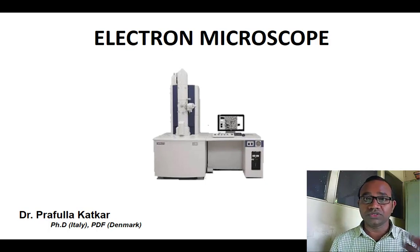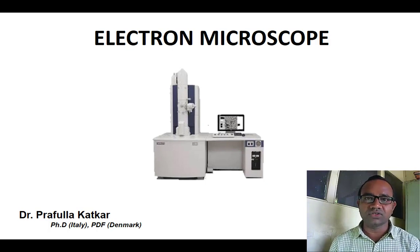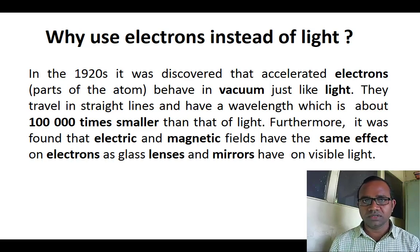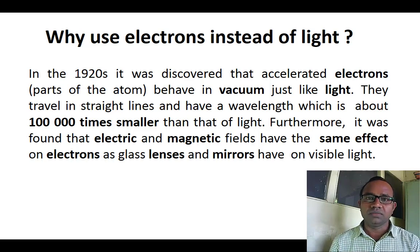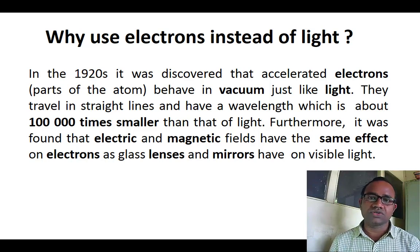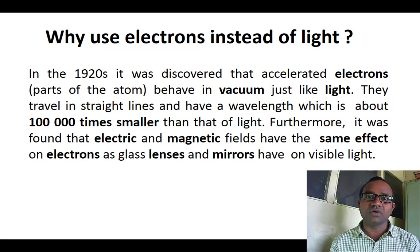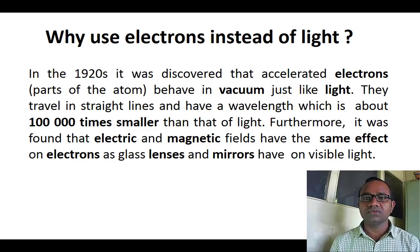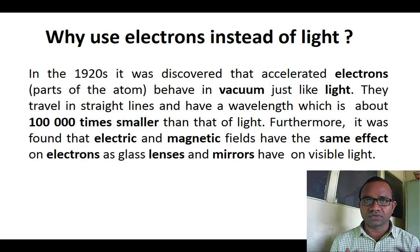As its name indicates, it uses electrons instead of light in order to capture the fine details of bacteria or objects. Since researchers have progressively needed to form more fine detail structures of objects, most particularly in the case of viruses, which cannot be observed by the light microscope, researchers started to use electrons as a source of illumination to focus the object.